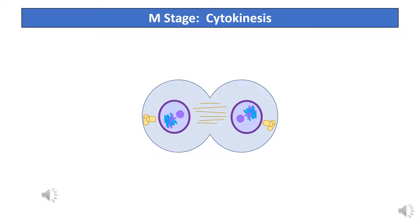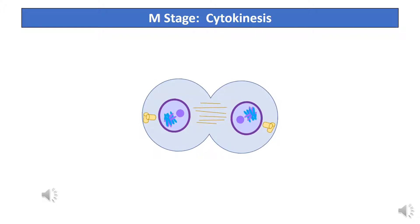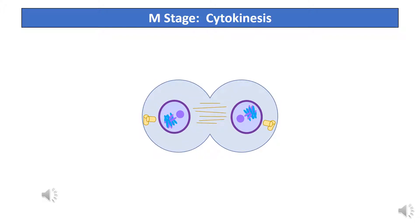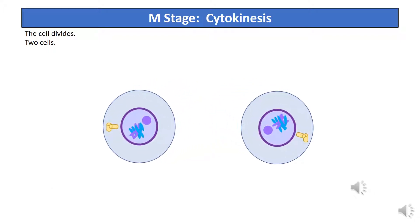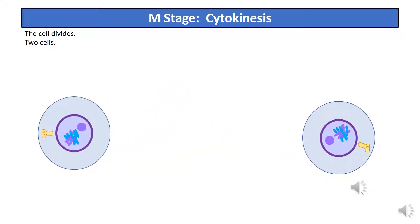At the last step, cytokinesis, the cell divides, and now we have two cells. Each cell now has 46 chromosomes. This concludes another exciting installation by the PowerPoint styling of Rebecca Oliver. Thanks for watching.